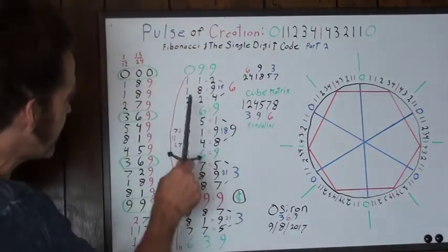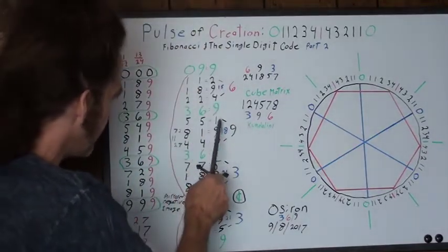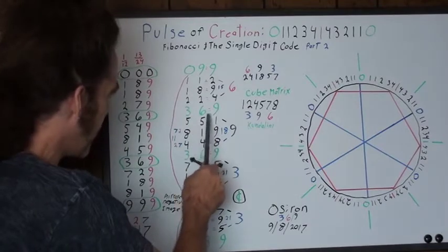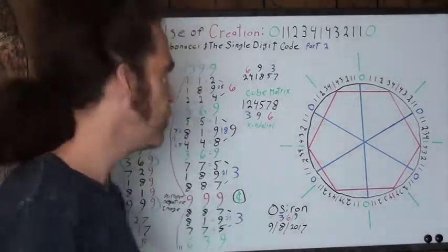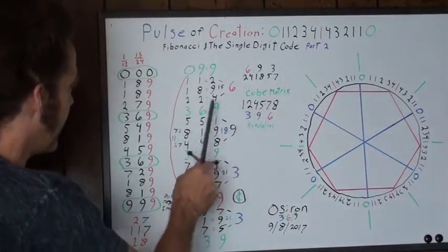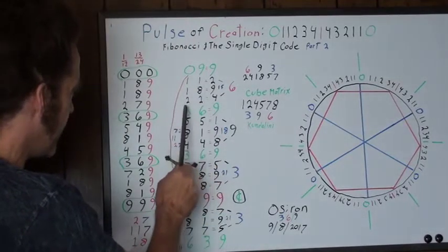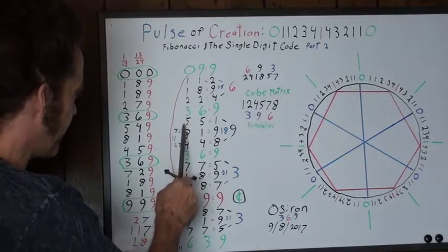Well, on every three, nine, six sequence, the numbers on either side of it will either reduce to a seven or a two. So in this case, you got three, six, nine. And then on one side, you have two. And then the other side, you have a five.